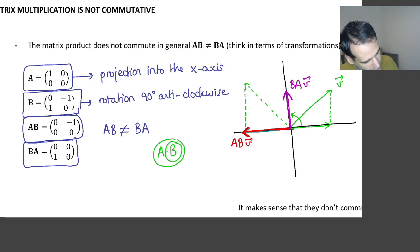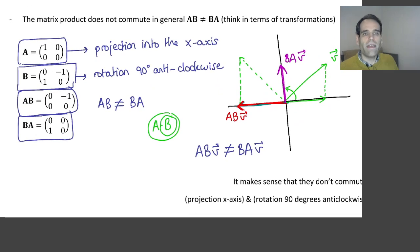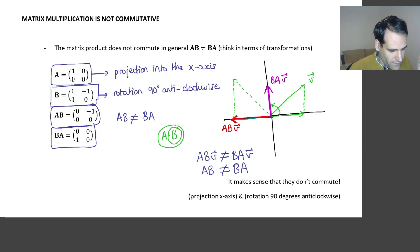And this vector is B times A times vector V. So we immediately see that AB times vector V is different to BA times vector V. And this is true for any vector in general. So this means that AB is different to BA. So the matrix A times B is different to the matrix B times A. This is what happens in general. And the name we give to these two transformations is that these two transformations don't commute with each other.